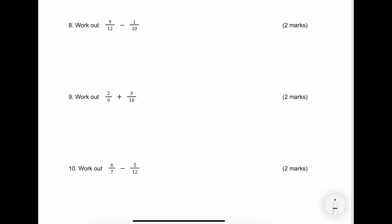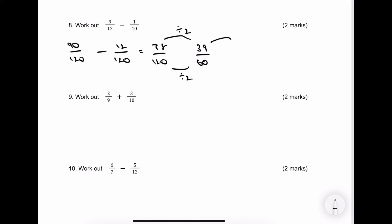Let's have a look at number 8. In this particular case I'm going to choose quite a big number — it's going to be 120, which makes things a little harder with bigger numbers to work with. I get 78 out of 120. I can divide top and bottom by 2 to get 39 over 60, and then divide top and bottom by 3 to get 13 over 20 as my final answer.